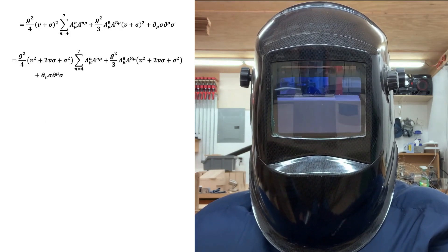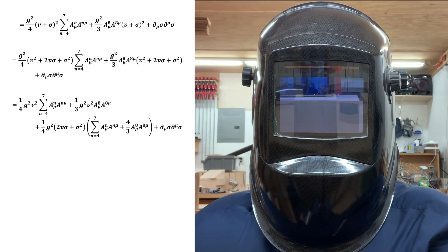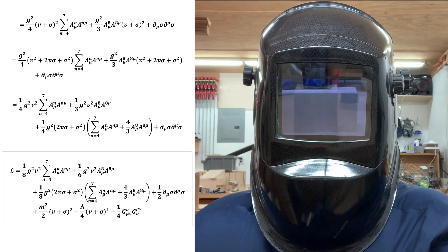The next step is to evaluate the squares. We can then reorganize to clearly reveal the vector boson mass terms. Inserting this back into the Lagrangian gives us this.